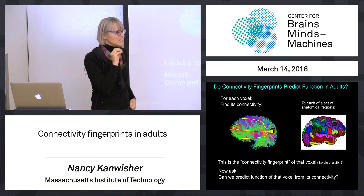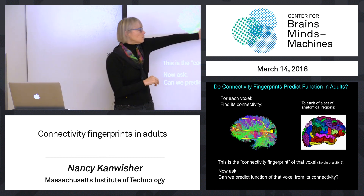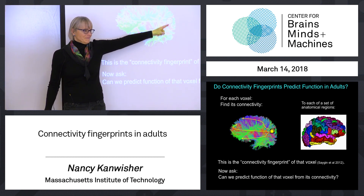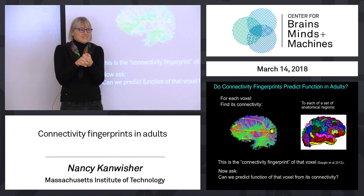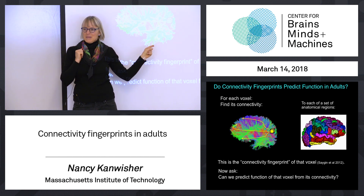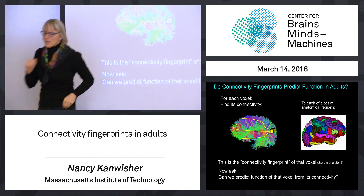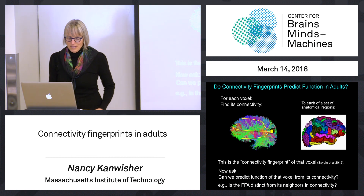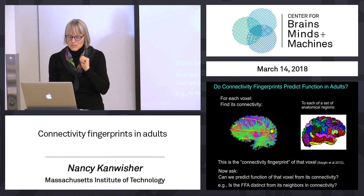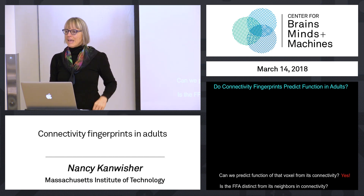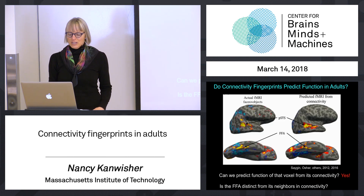So now the question is: can you use this connectivity fingerprint to predict what the function of that voxel is? Is the connectivity distinctive enough that just based on diffusion data, we could say what that voxel does? If the fusiform face area has a distinctive connectivity fingerprint, then we should be able to predict it. And in fact, it is — and we can show that.